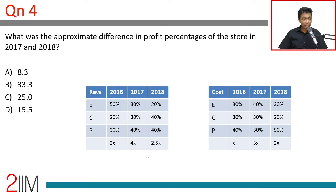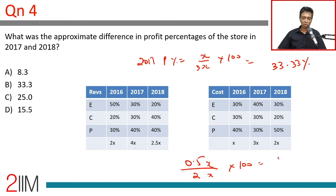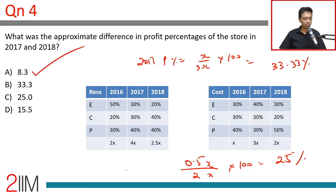Approximate difference in profit percentages of the store between 2017 and 2018. 2017: profit = x, cost = 3x, profit percentage = x / 3x × 100 = 33.33%. 2018: profit = 0.5x, cost = 2x, profit percentage = 0.5x / 2x × 100 = 25%. Difference = 33.33% − 25% = 8.33%.